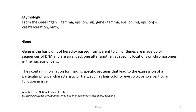The National Cancer Institute defines gene as follows: a gene is a basic unit of heredity passed from parent to child. Genes are made up of sequences of DNA and are arranged one after another at specific locations on chromosomes in the nucleus of cells. They contain information for making specific proteins, and genes lead to the expression of a particular physical characteristic or trait, such as hair colour or eye colour, or to a particular function in a cell.